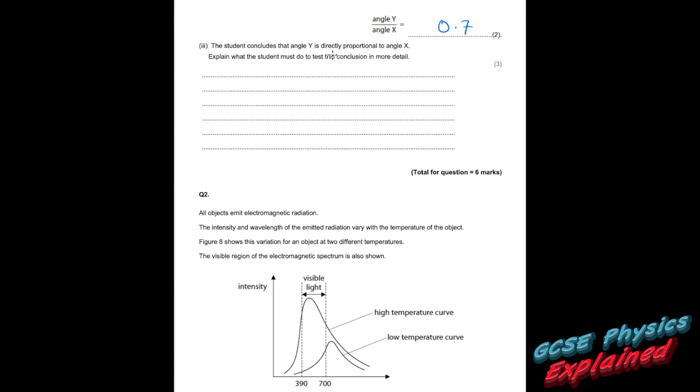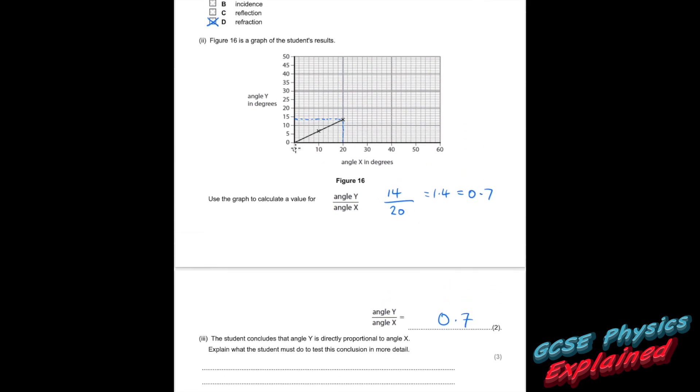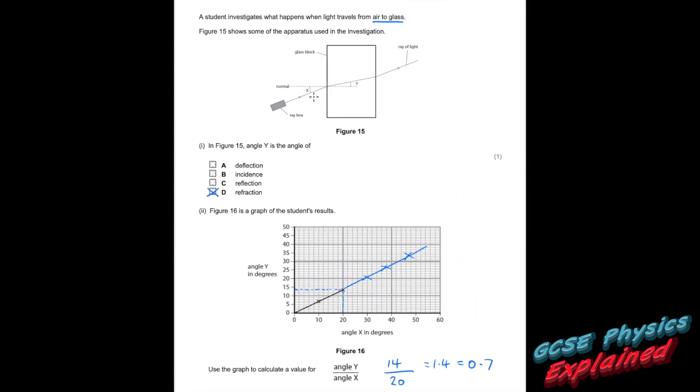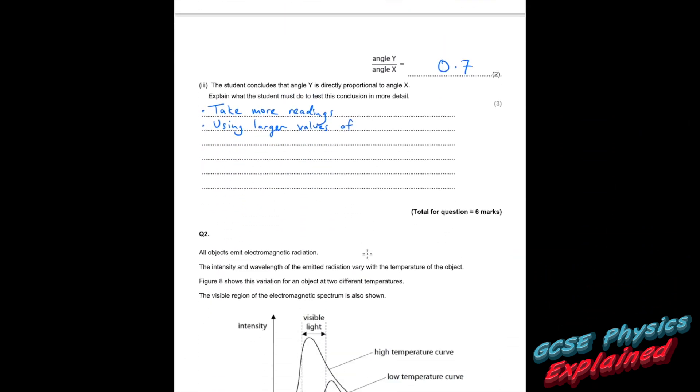Part 3. The student concludes that angle Y is directly proportional to angle X. Explain what the student must do to test this conclusion in more detail. If we have a little look at that, you can see they've only took two results. So they basically need to take more results so you could see if it was actually a straight line going through the origin. And if you double one thing, it'll double the other. Take more readings using larger values of X and repeat. Three marks.